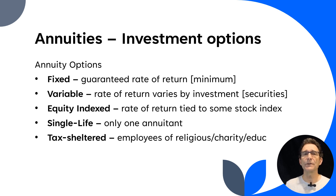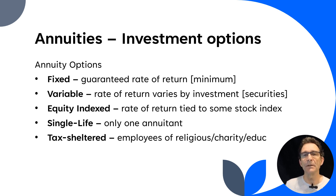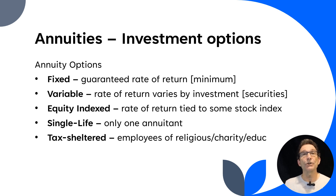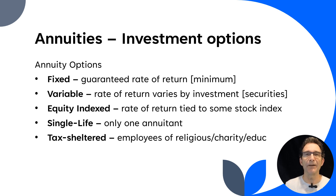Another investment growth option is called an equity indexed option, where the rate of return is tied to some stock index. That could be a little more stable than a pure variable rate, but it will still have some variation. People choose these different options because different options could yield a little more growth, and if somebody is willing to take a little more risk in exchange for potentially more growth, that's why these different options exist.